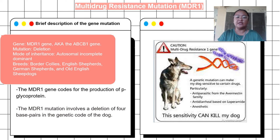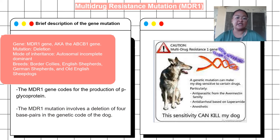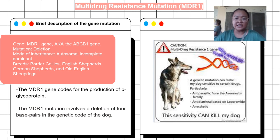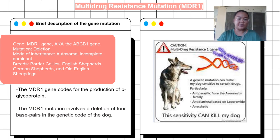The MDR1 gene mutation involves a deletion of four base pairs in the genetic code of the dog. The deletion results in the protein coded by this gene — P-glycoprotein — being abnormally short, making affected dogs more sensitive to the negative effects of certain medications. The chromosomal location of the mutated gene is at chromosome 7p21.